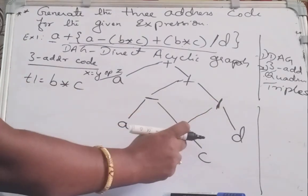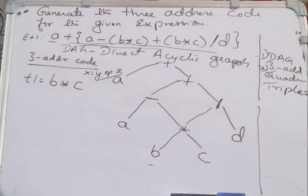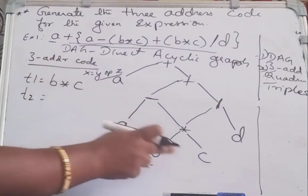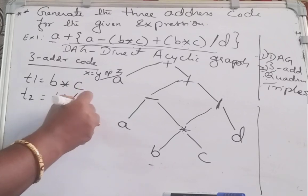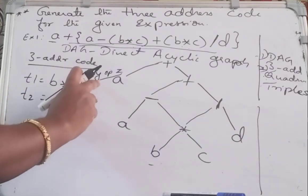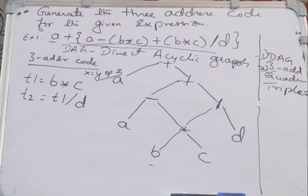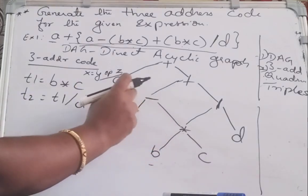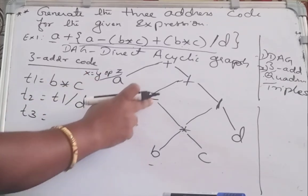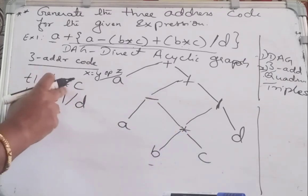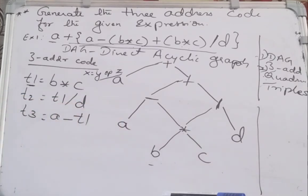Next, the right part: this is divided by D, and the result is now in T1. So T2 = T1 / D. It is a three address code instruction: Y is T1, operator is division, D is the Z operand. Then for the left-hand side operator, I am taking temporary register T3. T3 = A minus T1, because B star C is stored in register T1.